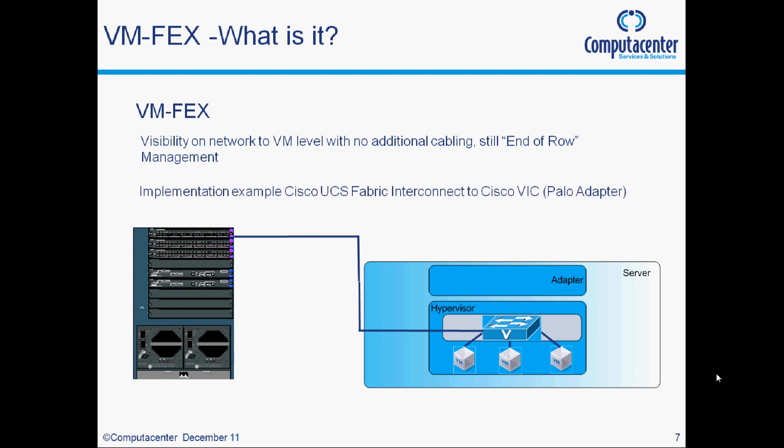A typical implementation of VMFex would use Cisco UCS fabric interconnects. You must use the Cisco VIC — the M81KR, previously referred to by its codename, the Paolo adapter.